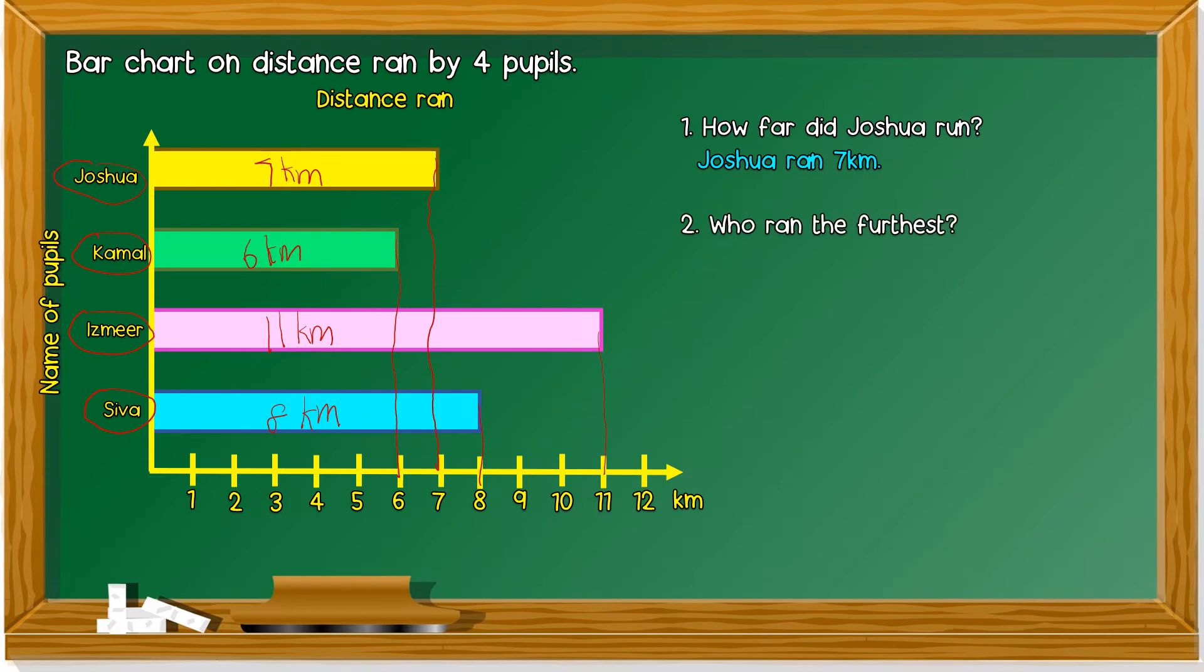Who ran the furthest? Paling jauh. Furthest maksudnya paling jauh. Who ran the furthest? Okay, if you see the bar chart is the longest, then that's the most or, in this case, the furthest.